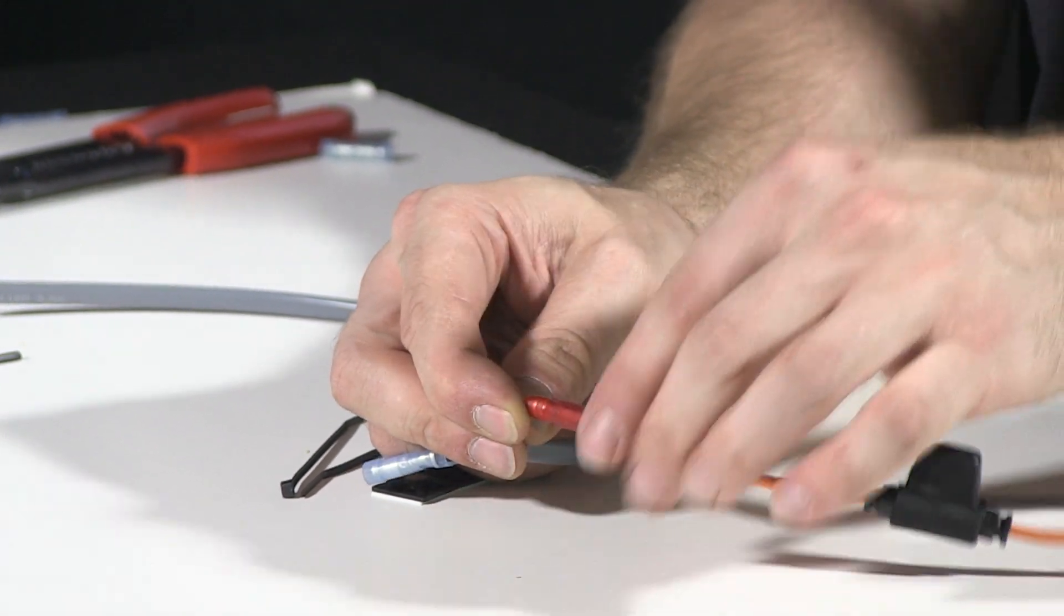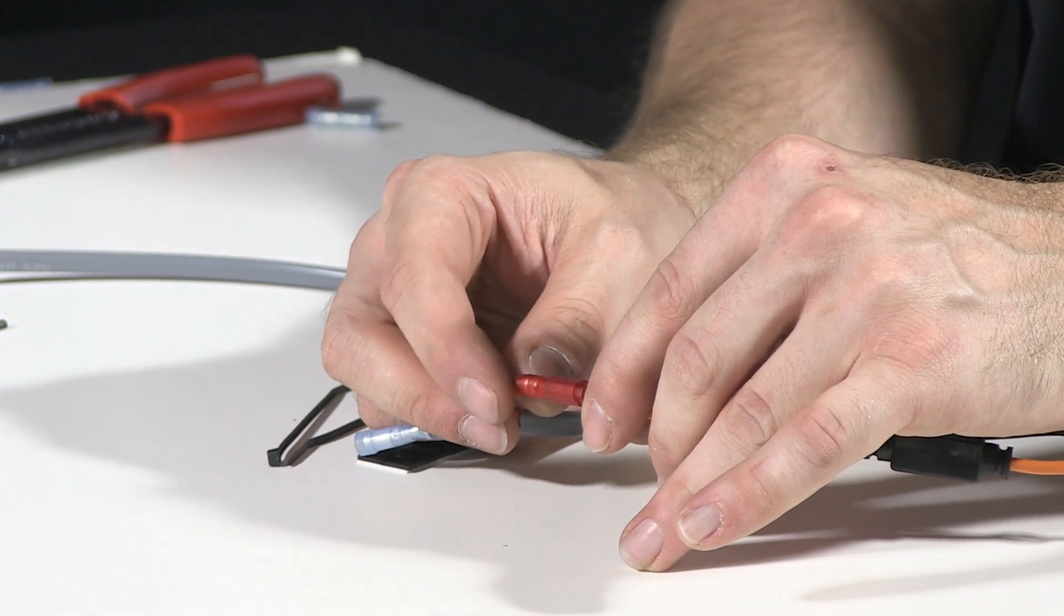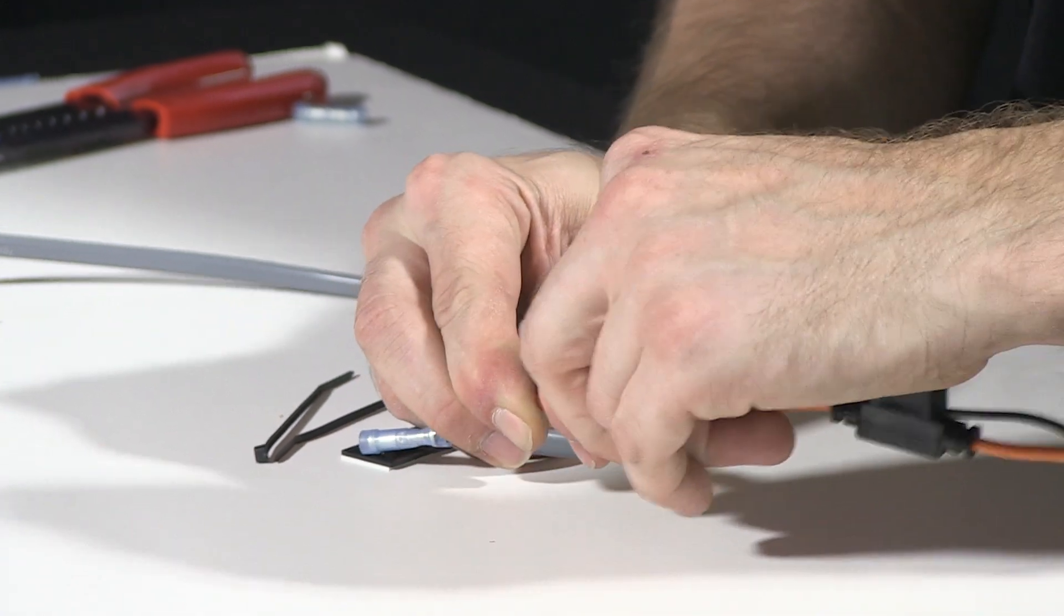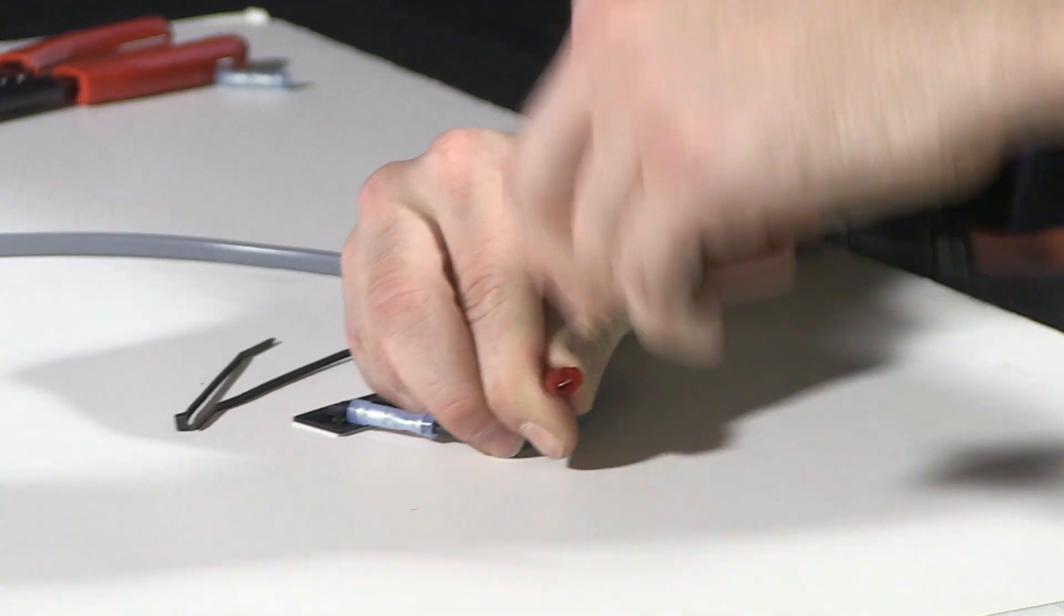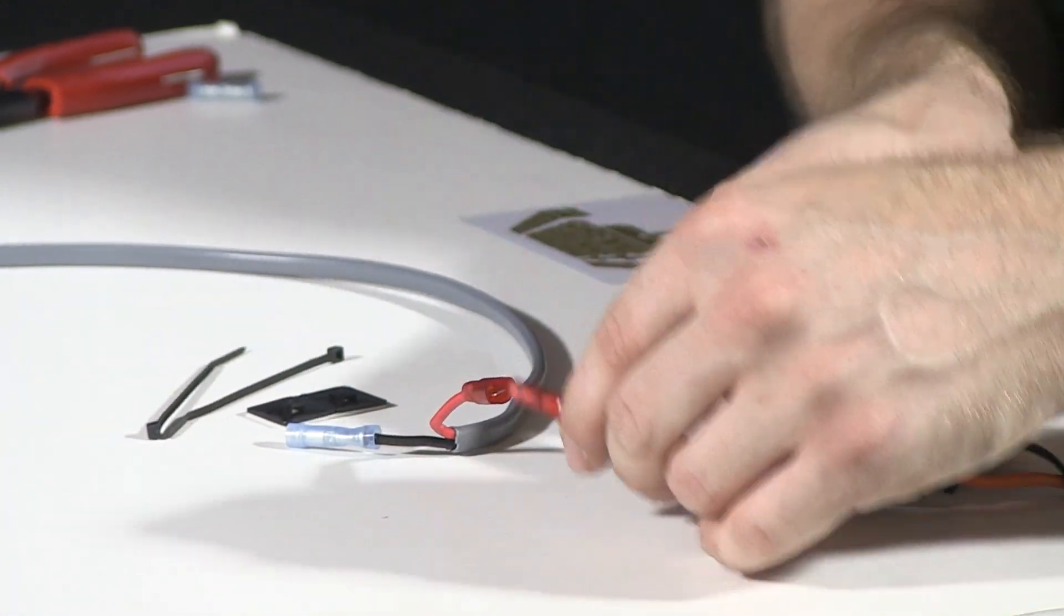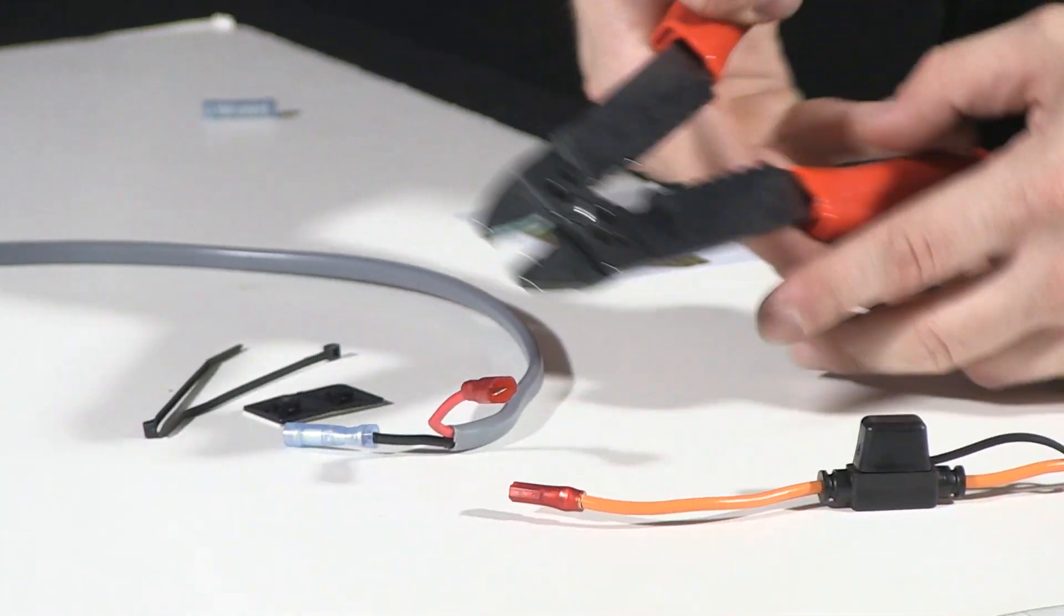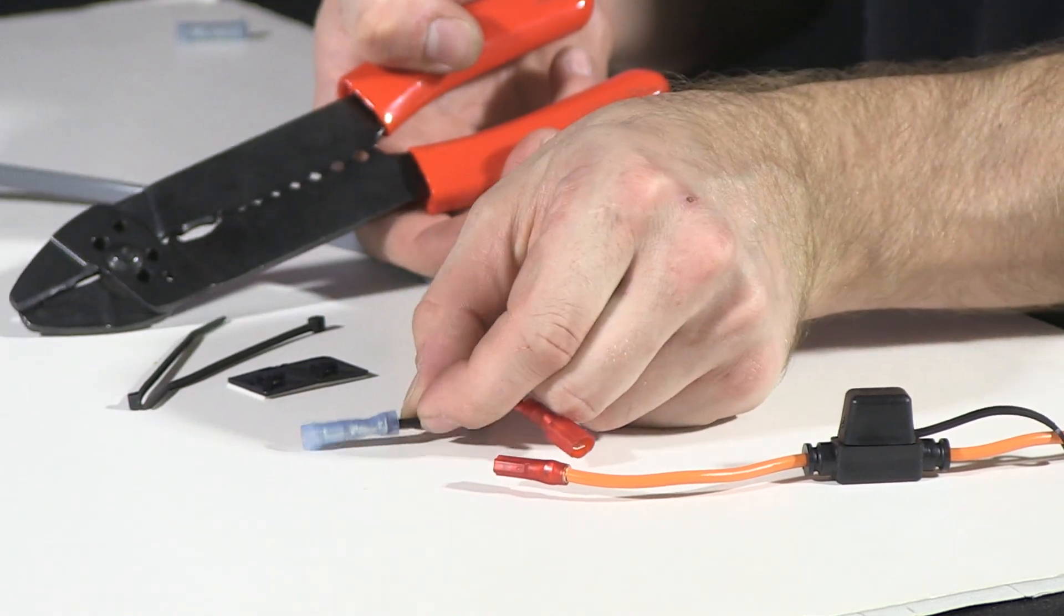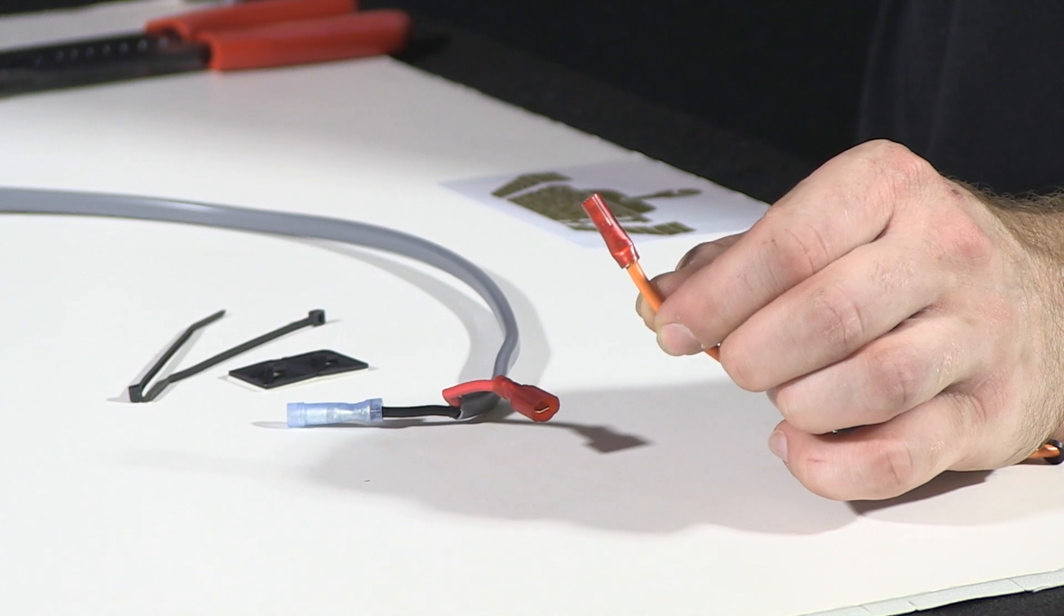What this does with the quick connect is when you have an inline fuse like we have here, it allows you to have a point where if you ever need to remove your fuse holder or work on your harness at any point in the future, you can slide these apart. It's a nice firm connection that allows you to keep from having to snip a butt connector that may be on your harness and then having to make new connections on your repair.